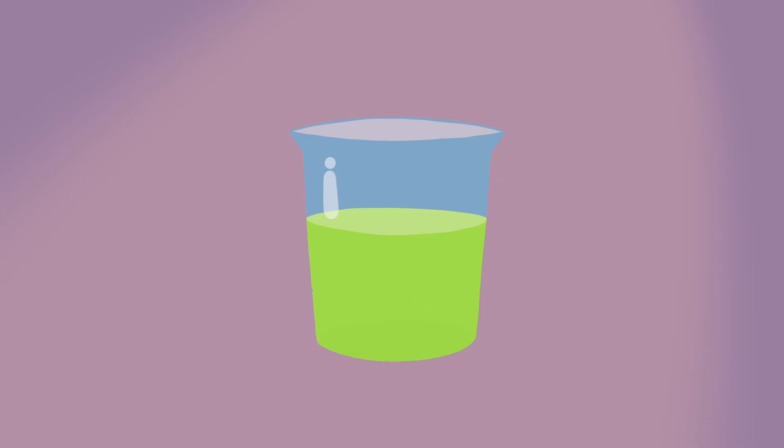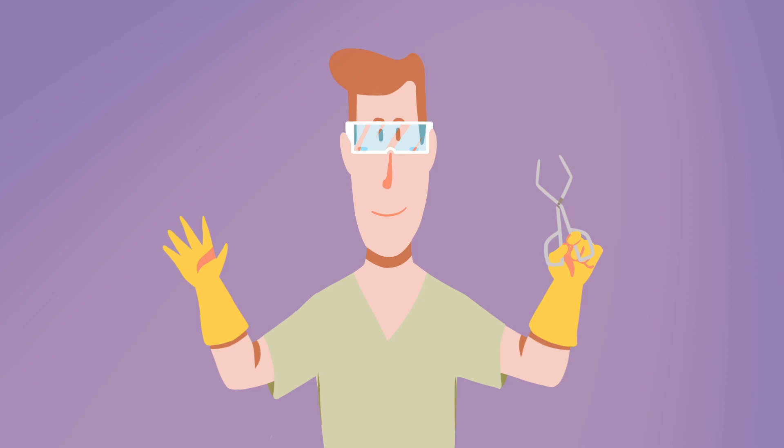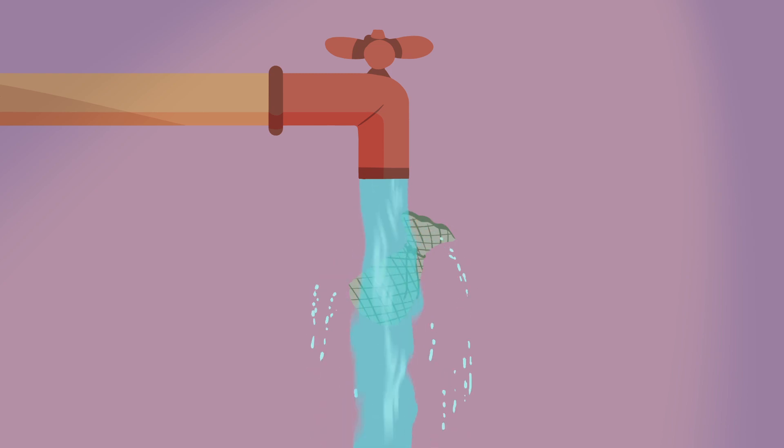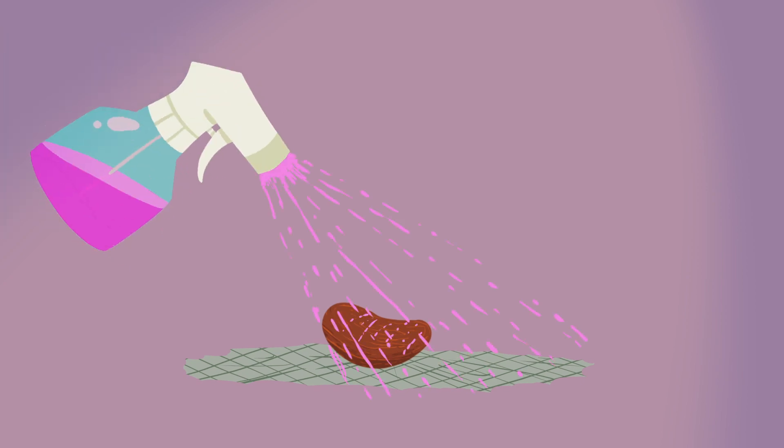Finally, you can try immersing the seeds in a sulfuric acid solution. Make sure you're wearing protective goggles and gloves any time you work with such a dangerous substance. Place the seeds into a wire mesh pouch and immerse the pouch in the solution for 10 minutes. Then take out the pouch and rinse it with clean water. Take out the seeds and, as before, spray them with bleach so they don't get moldy.